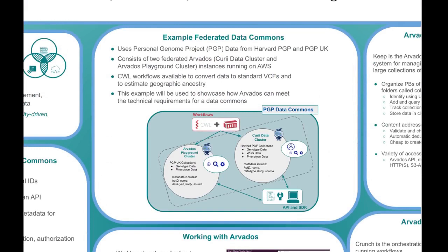Here's an example of using Arvados to support a data commons. The Personal Genome Project, or PGP, is a network of projects where participants have released their genetic data under a consent that allows for unrestricted scientific research. Different national PGPs each manage their own data, so we also want to make it easy to search and access data across different PGP datasets.